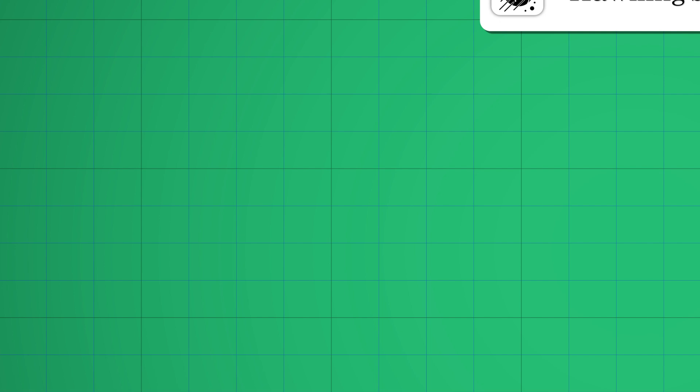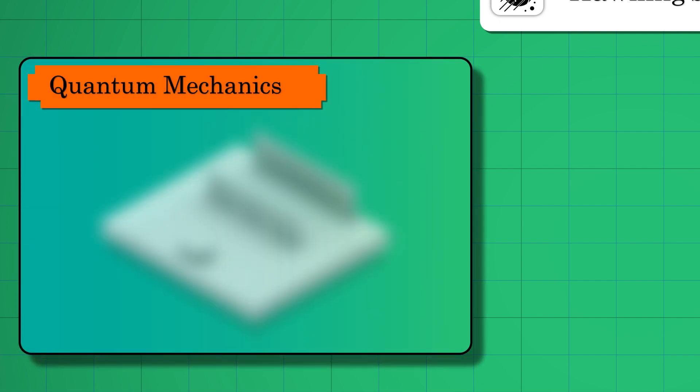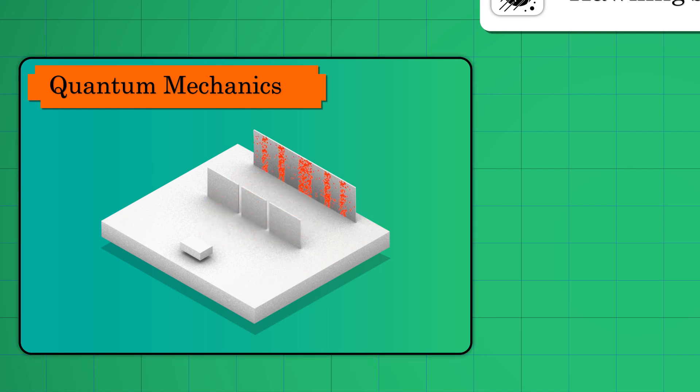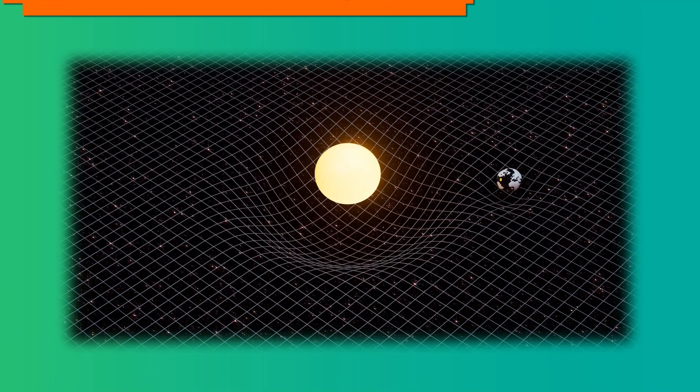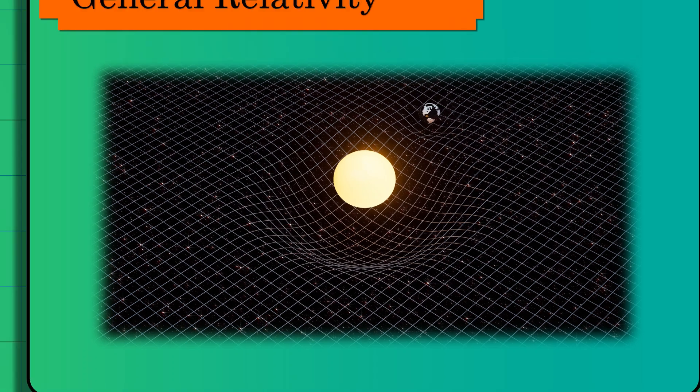Our modern physics stands on two extremely successful theories: quantum mechanics governing behavior at small scales, and Einstein's general relativity which explains the workings of the universe at a large scale.